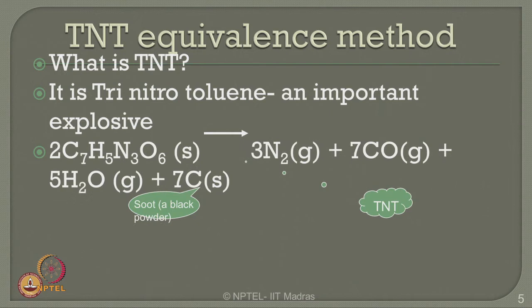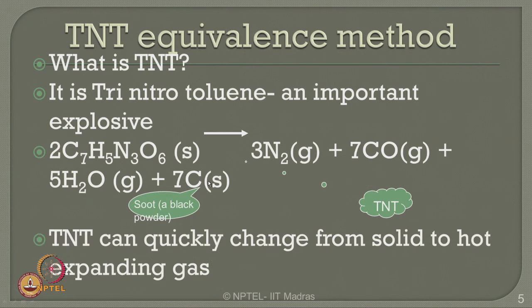TNT is tri-nitro-toluene, an important explosive which has a chemical composition as shown in the slide. The chemical composition has components as shown in the figure, whereas the black powder which is the residual result from TNT is otherwise called soot in the literature. This is the chemical composition of TNT and this is the black powder resulting from TNT.